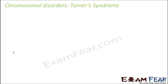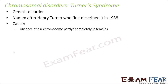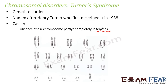The third chromosomal disorder is Turner syndrome. This is again a genetic disorder, named after Henry Turner who first described it in 1938. The cause is the absence of an X chromosome, partly or completely, in females. Affected females do not have the XX chromosome; instead, they have just one X chromosome. So the total chromosome number is 45 instead of 46. It is also termed 45X because it has only a single X chromosome.